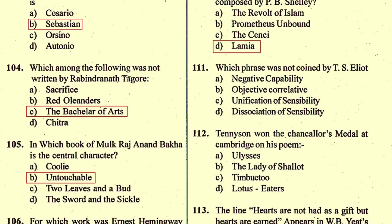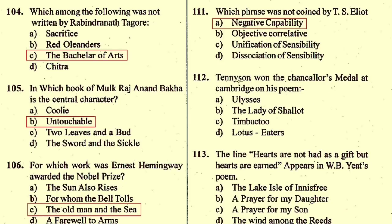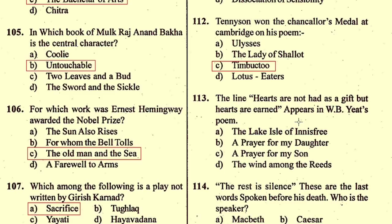Question number 112: Tennyson won the Chancellor's Medal at Cambridge for his poem — option C, 'Timbuctoo', is the correct option. Question number 113: The line 'Hearts are not had as a gift, but hearts are earned' appears in W.B. Yeats's poem — the right option is B, 'A Prayer for My Daughter'.